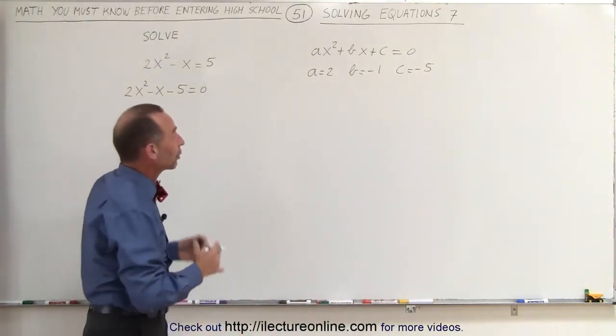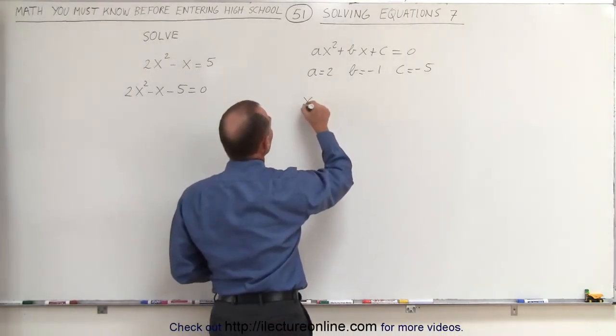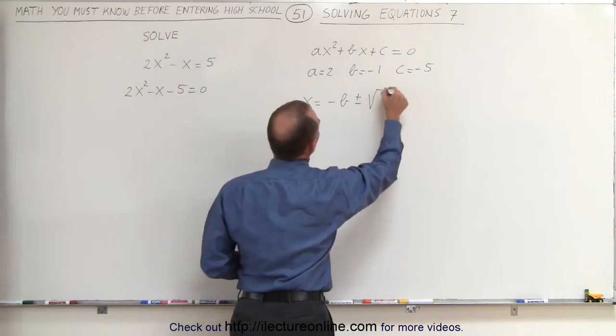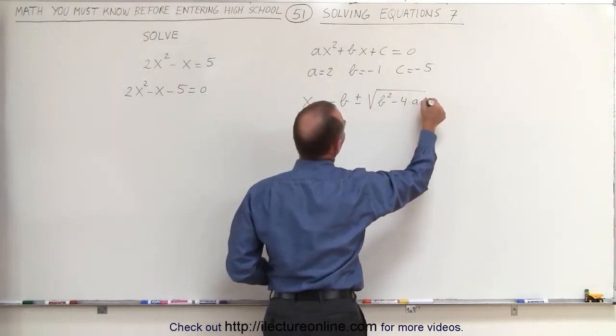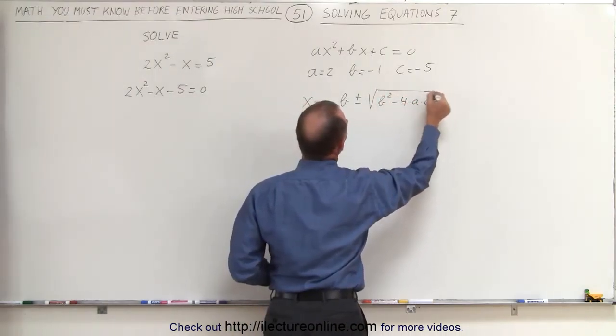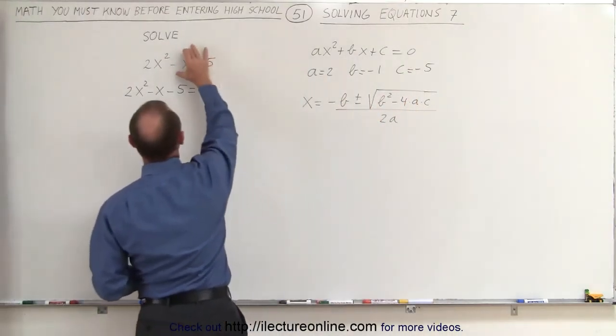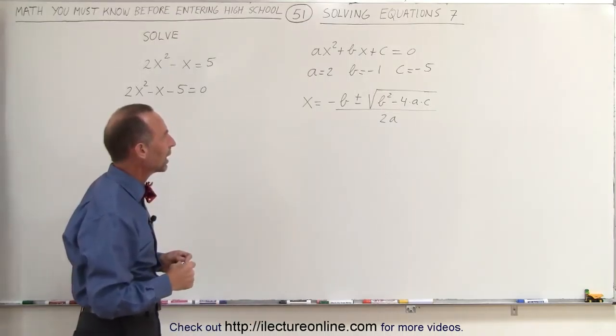We know that if we have a quadratic equation like this, we can solve it by saying that x is equal to minus b plus or minus the square root of b squared minus 4 times a times c, all divided by 2a. All we have to do now is plug in the proper values for a, b, and c to get the values for x that will satisfy this original equation. So let's do that.